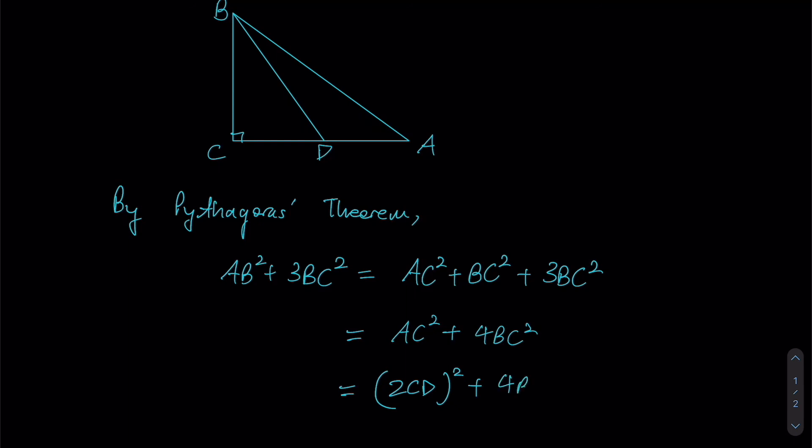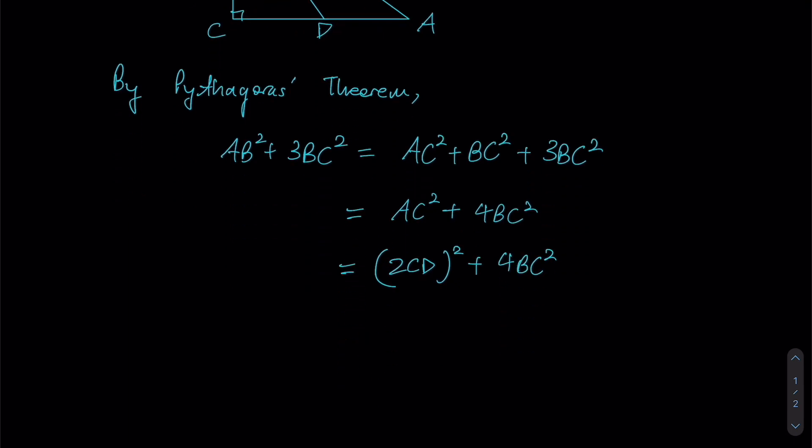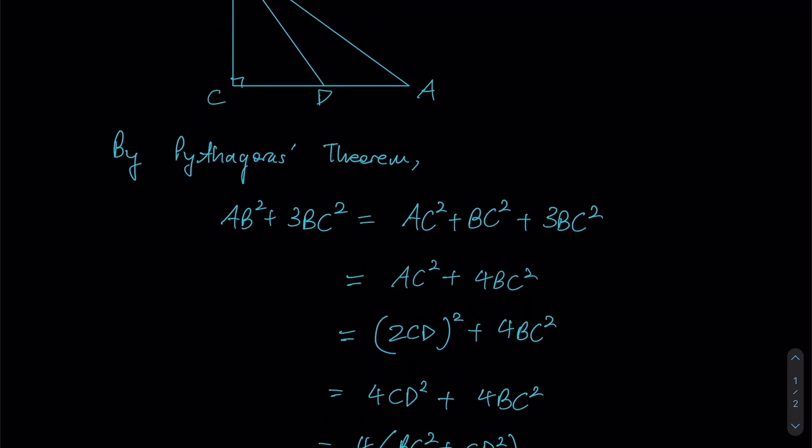Whole thing squared plus 4BC². Expand this out, we get 4CD² plus 4BC². At this point, we could factorize out the 4, so we have 4(BC² + CD²). Based on the figure that...